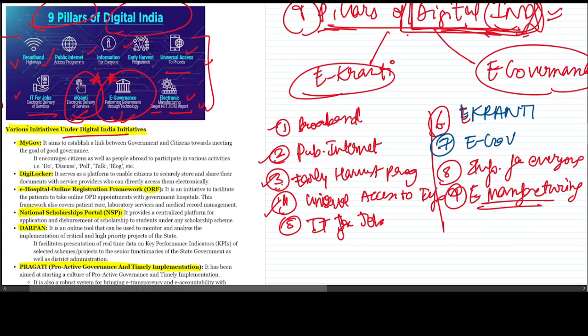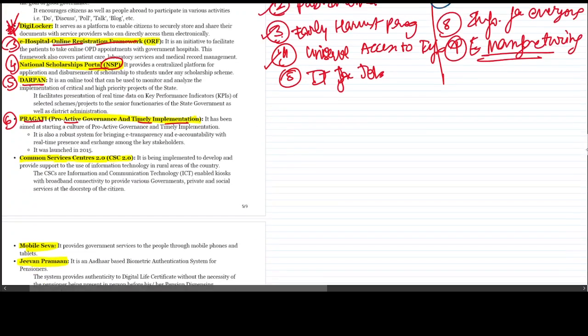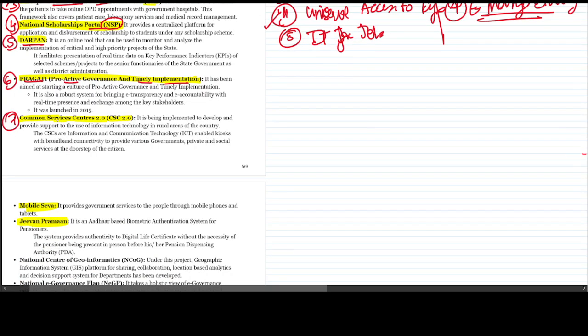The various initiatives government launched under Digital India project were: MyGov portal, second is Digital Locker where documents can be stored, that is online registration framework. Fourth is National Scholarship Portal NSP, fifth is DARPAN, sixth is PRAGATI which is proactive governance and timely implementation. Seventh is Common Services Center CSC 2.0, eighth is Mobile Seva, and ninth is Jeevan Pramand.